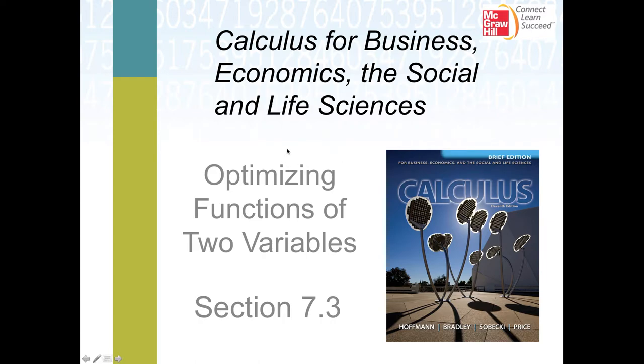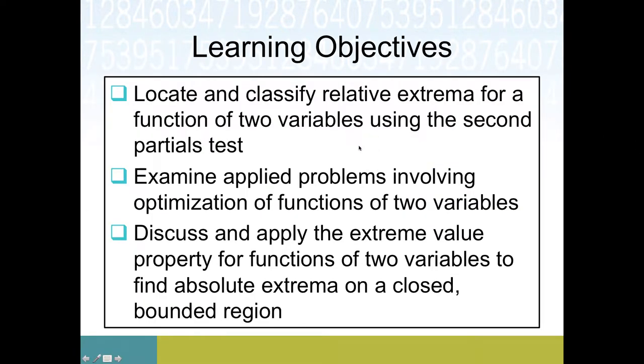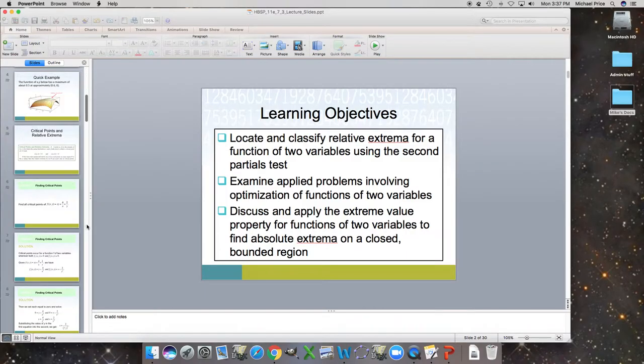Hello and welcome back. We are talking about section 7.3, optimizing functions of two variables. So this second video, we're going to tackle basically the other half of this learning objective. We're going to try to classify relative extrema, that is decide whether one is a max, a min, etc. So I guess we'll check that off and we'll say we're going to examine applied problems as well for optimization. But let's get back on track, figure out where we're starting.